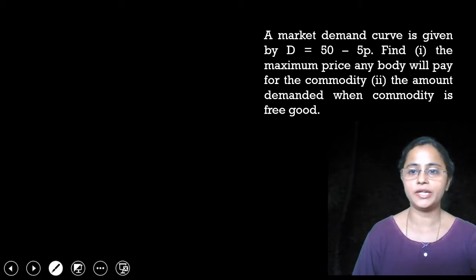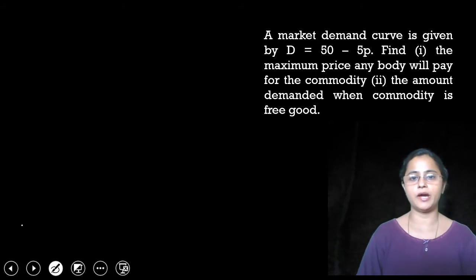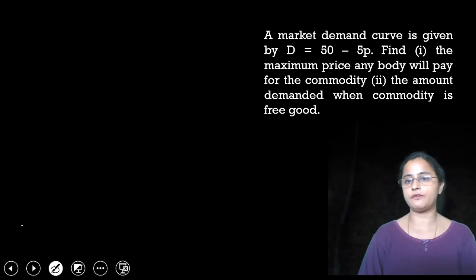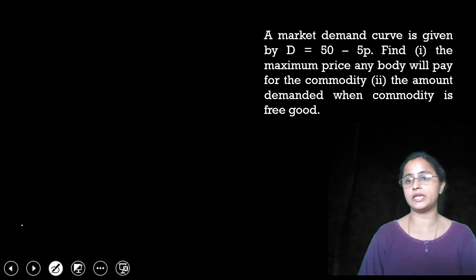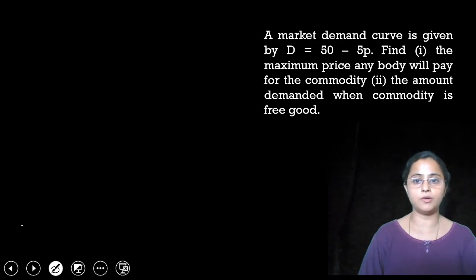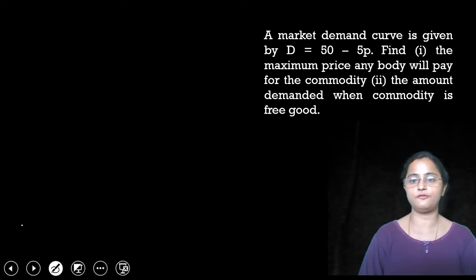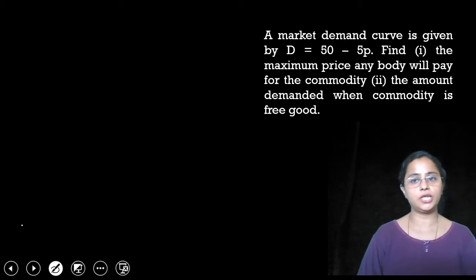Market demand curve is given by D equals 50 minus 5P. Find the maximum price anybody will pay for the commodity, and the amount demanded when the commodity is free. So this is our question.